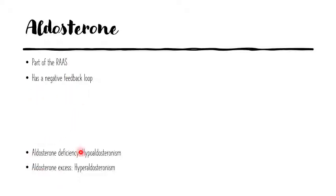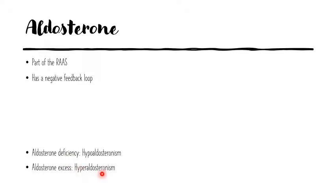So aldosterone deficiency is naturally going to lead to hypoaldosteronism and its excess is going to lead to hyperaldosteronism, which is pretty self-explanatory. However, in this lecture we're only going to cover aldosterone deficiency in the form of Addison's disease, which doesn't just involve aldosterone — it also involves the other adrenal hormones like cortisol and even androgens to some extent. Whereas primary hyperaldosteronism is simply known as hyperaldosteronism, and we will be covering that as well.